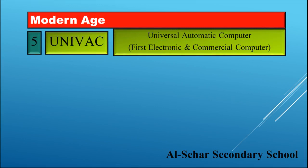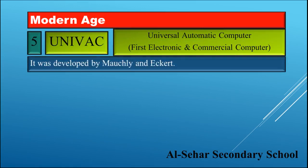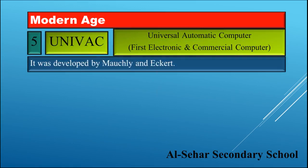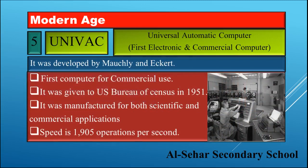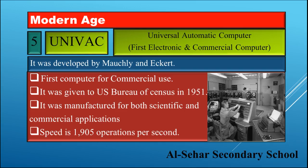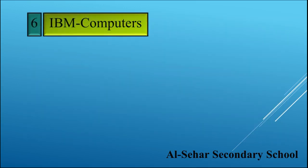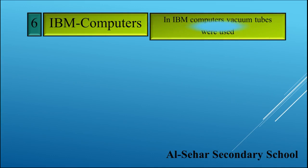UNIVAC — Universal Automatic Computer — was the first electronic commercial computer. It was developed by Mauchly and Eckert. It was the first computer for commercial use and was given to the US Bureau of Census in 1951. It was manufactured for both scientific and commercial applications, with a speed of 1,905 operations per second.